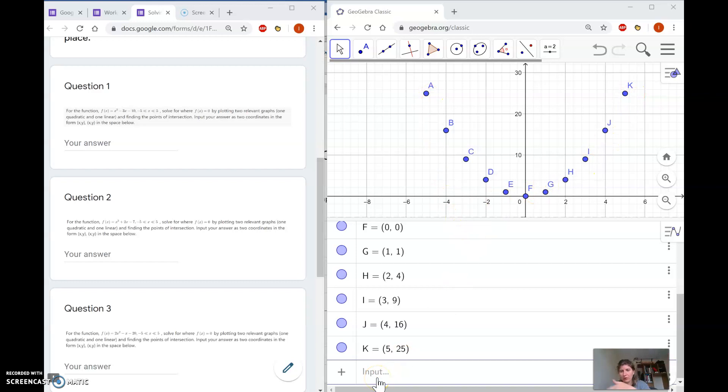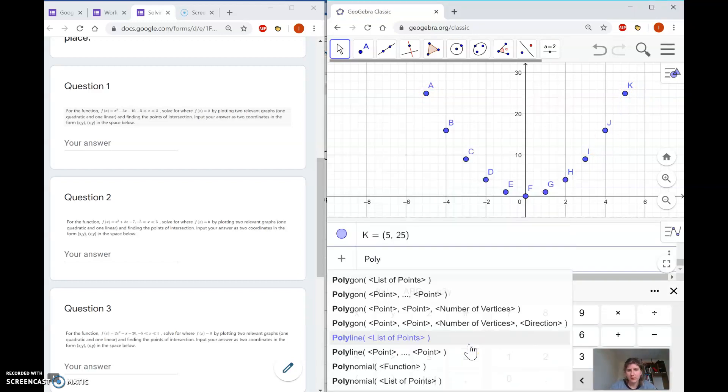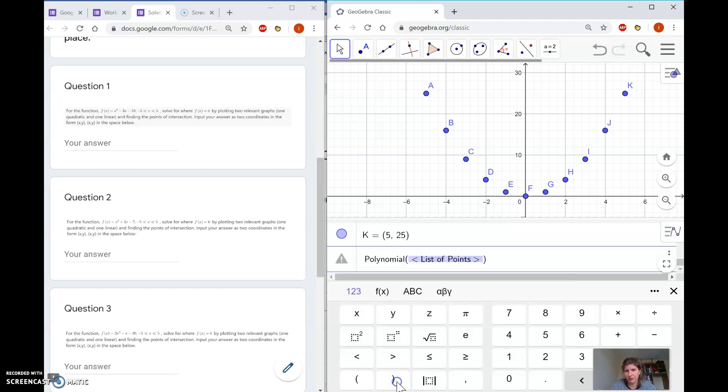Next, we need the curve that's going to go through those points. Type in 'polynomial' and select the one that says polynomial with a list of points. We're going to type in a, b, c, and once you've done about three points, it will create the curve. Press enter, and it tells you it's x², which is what it should be.